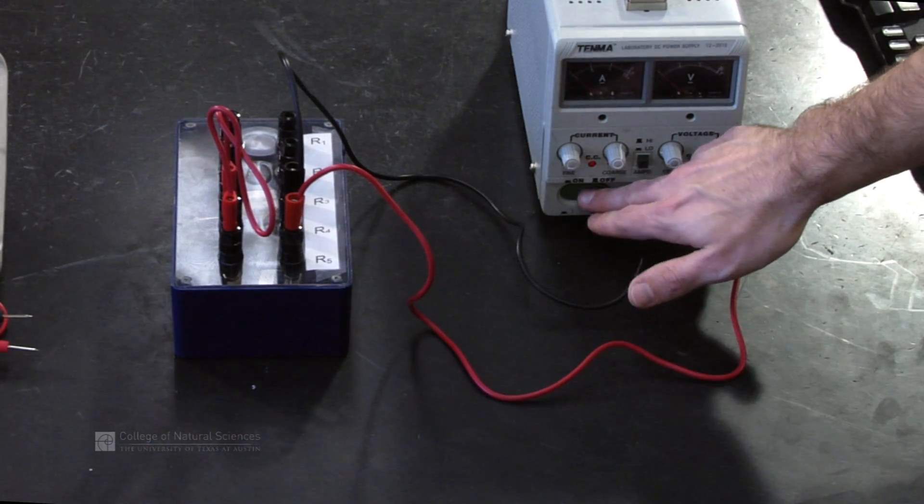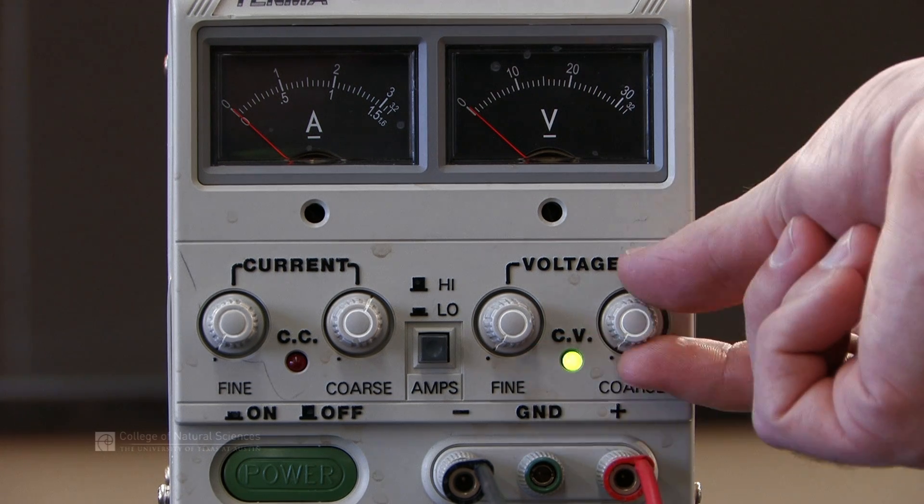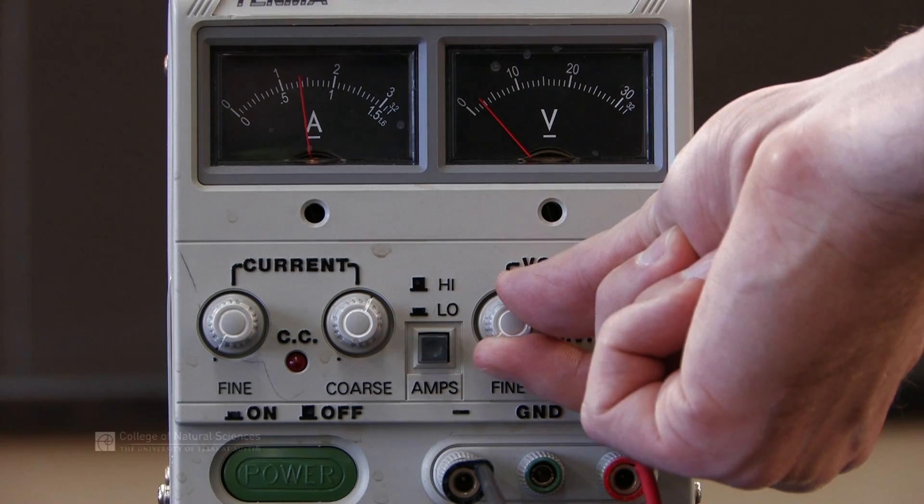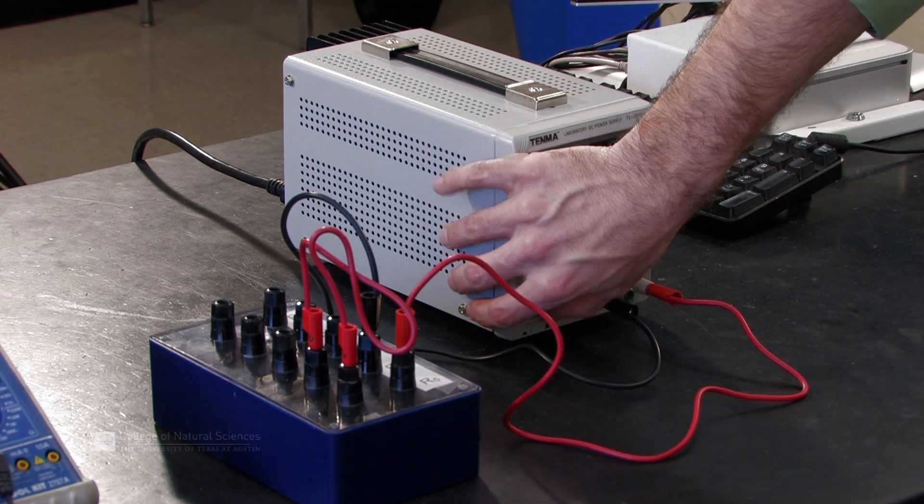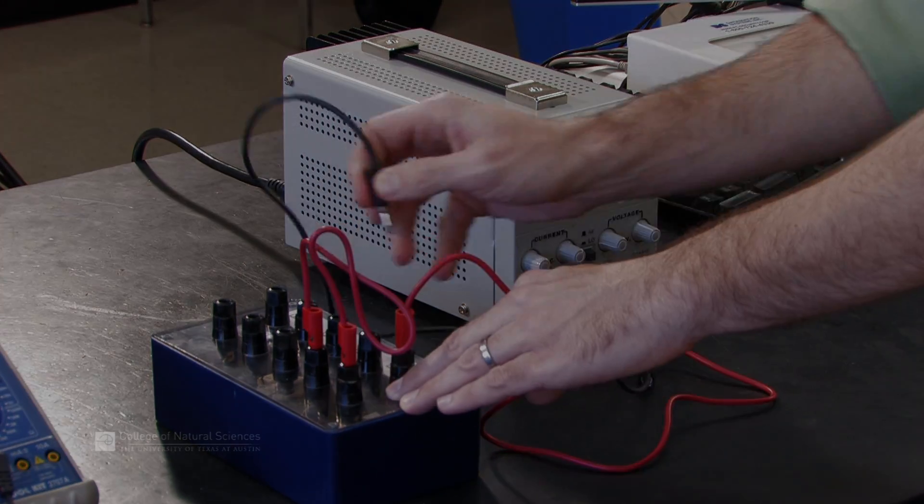When we get everything completed, we can turn the circuit on. And this is a variable power supply so we can adjust the voltage as needed using the coarse and the fine adjusts.